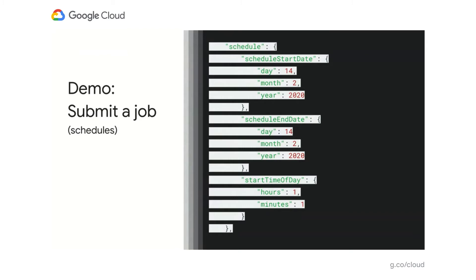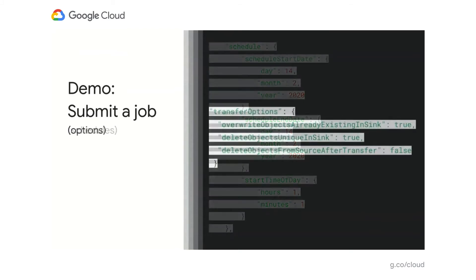Another part of the config is schedules. Schedules are comprised of three parts: when does the schedule start, when does it end, and at what time do we execute. All Storage Transfer Service jobs run daily — so in this example, hours equals one and minutes equals one, meaning this job will run at 1:01 a.m. You can also submit transfer options to control whether you're allowed to overwrite data for objects that already exist at the destination, or if you want to delete data after it's been copied — more of a move operation instead of creating a second copy.